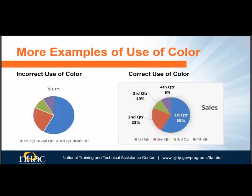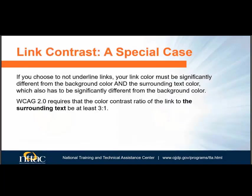Back to the pie chart example. The chart on the left only uses color to indicate the amount of sales during each quarter, whereas the chart on the right includes the quarters and percentage of sales. Imagine if the chart on the left were printed in grayscale — you would have trouble figuring out which quarter was which. The chart on the right would be no problem in grayscale. Additionally, WCAG 2.0 requires that the color contrast ratio of a link to the surrounding text be at least 3 to 1 when links are not underlined.